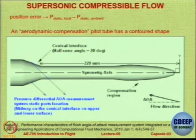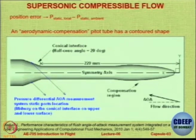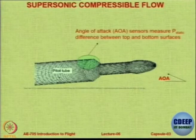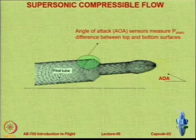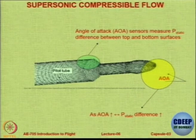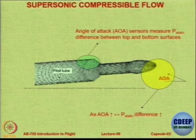The difference in pressure recorded on the upper and lower surfaces can be used for finding the angle of attack of the aircraft. This figure has been borrowed from a paper published by Professor Masood from a university in Pakistan. He has done CFD investigations, and the paper is published in the journal Engineering Applications of Computational Fluid Mechanics. The mesh was created across the pitot static tube with an angle of attack sensor measuring the static pressure difference between the top and bottom surfaces. As the angle of attack increases, there is an increase in the static pressure difference.